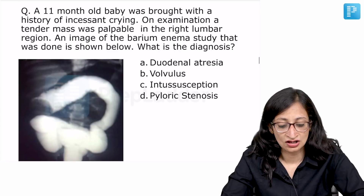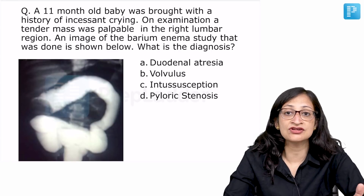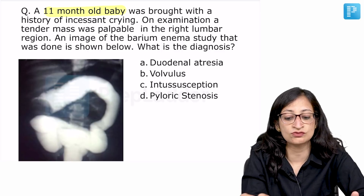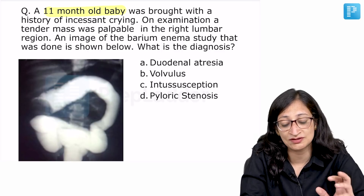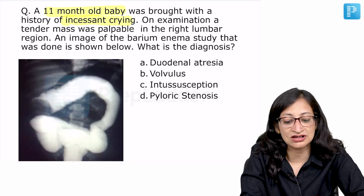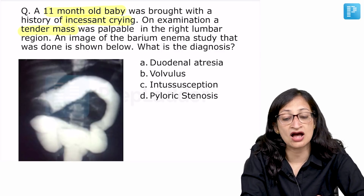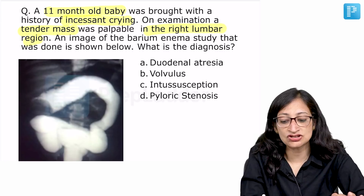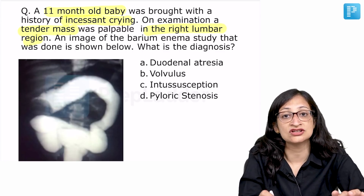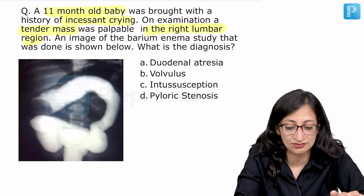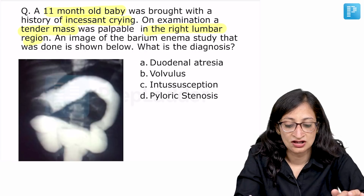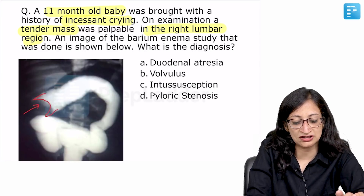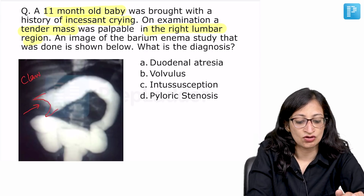Moving ahead to the fourth question. An 11-month-old baby brought with a history of incessant crying, and on examination a tender mass was palpable in the right lumbar region. An image of the barium enema study is shown below. What you see here is a claw-like image — this is typically known as the claw sign.